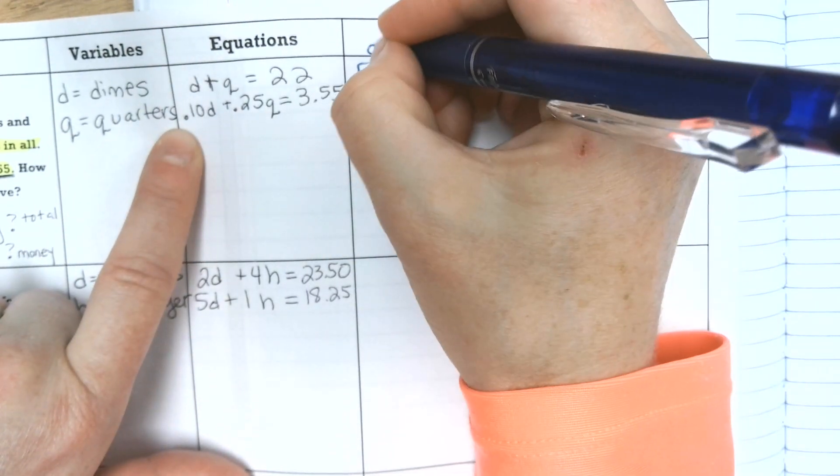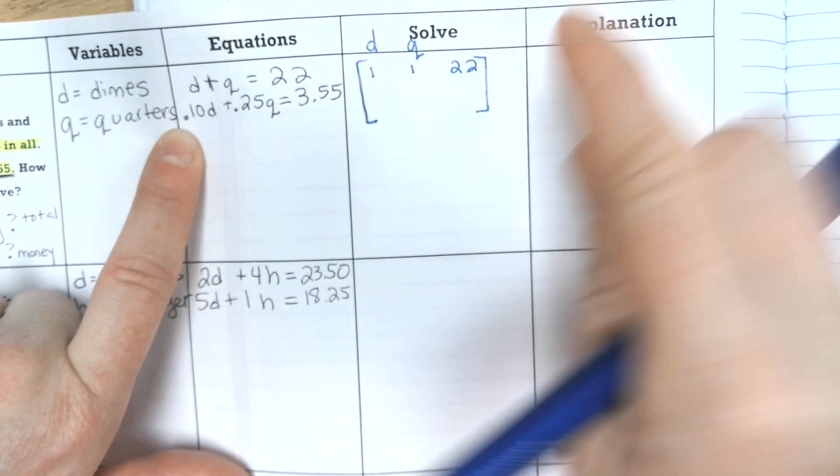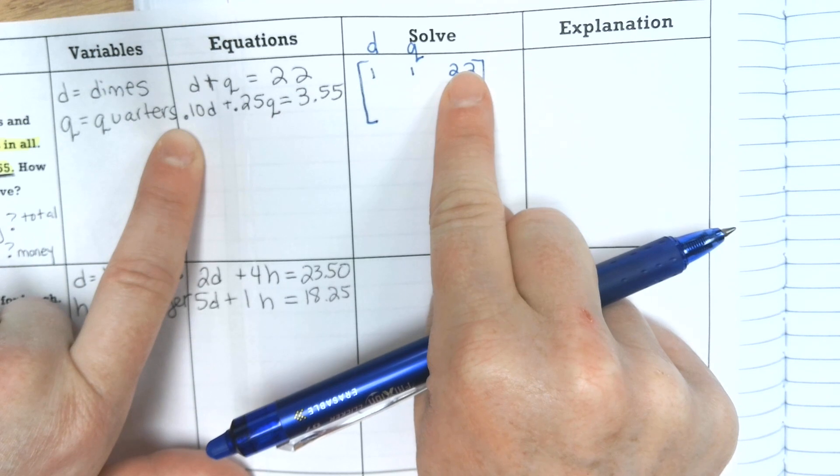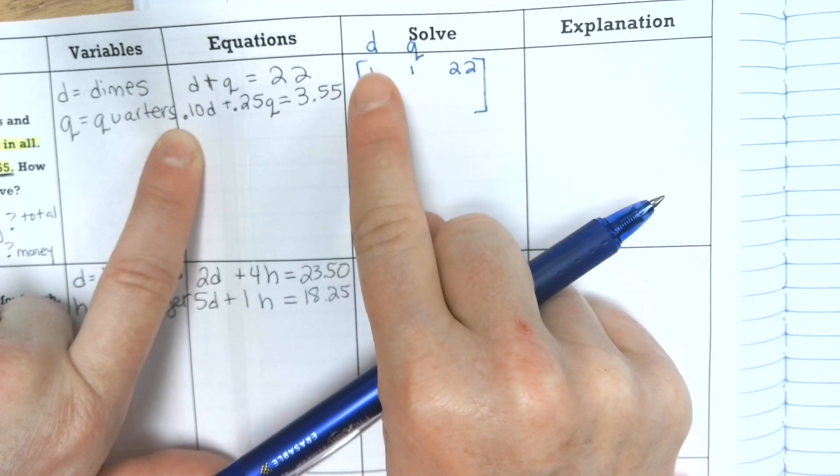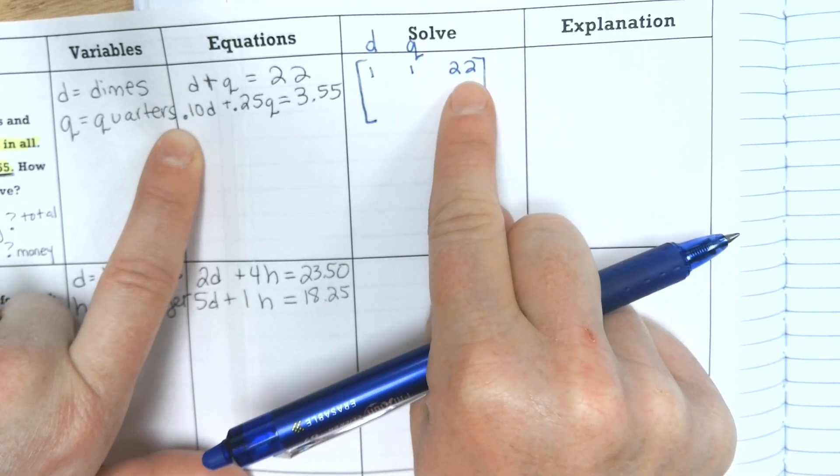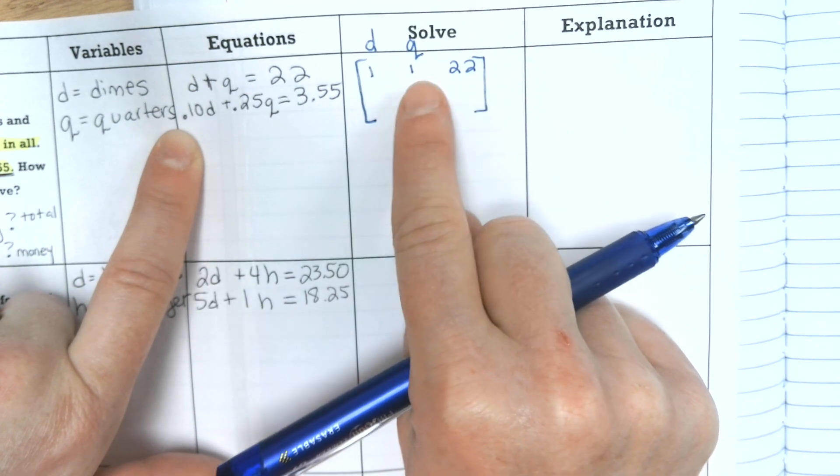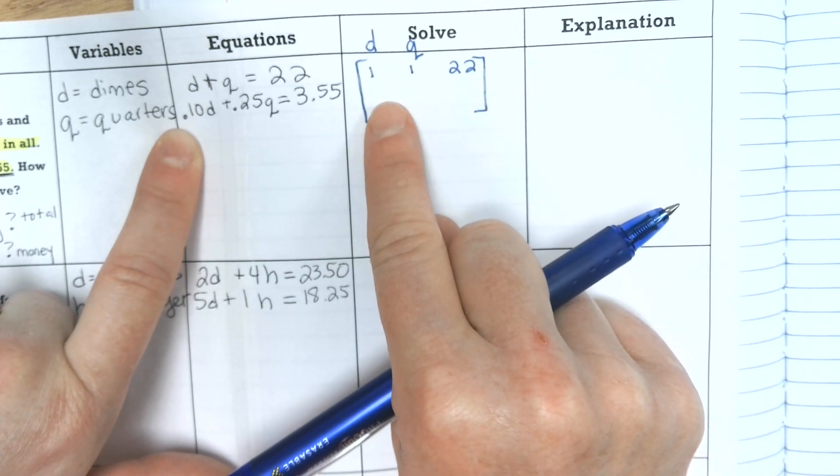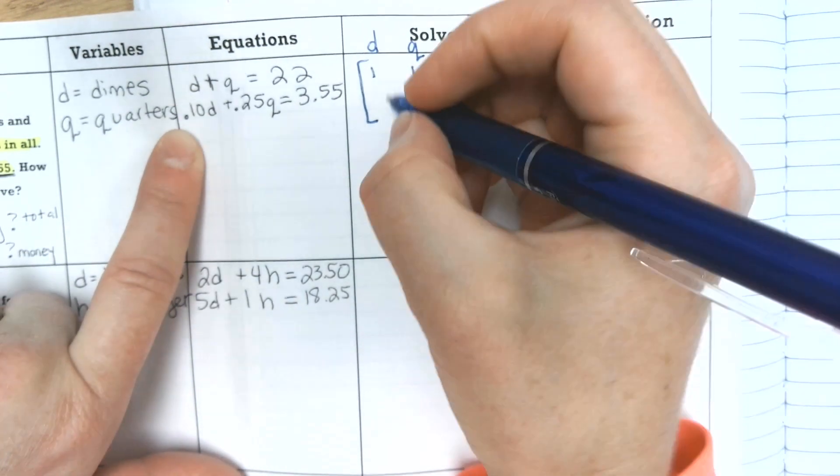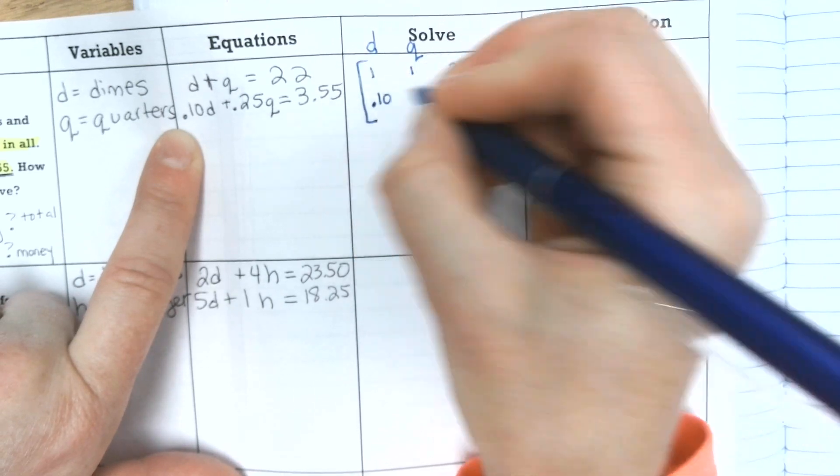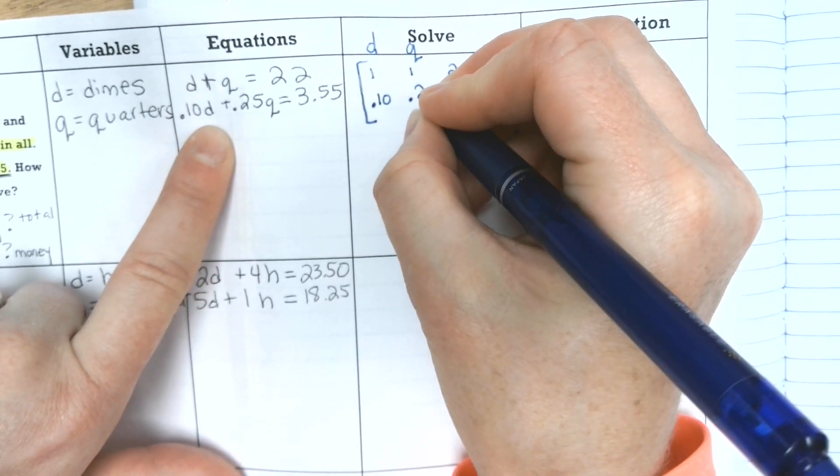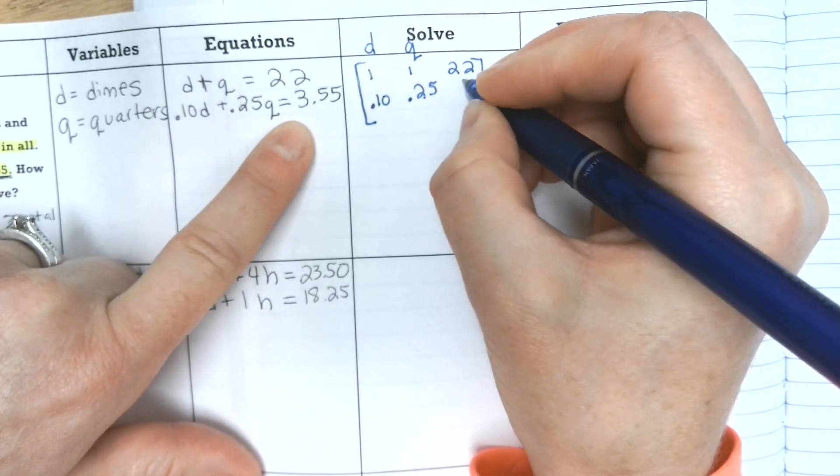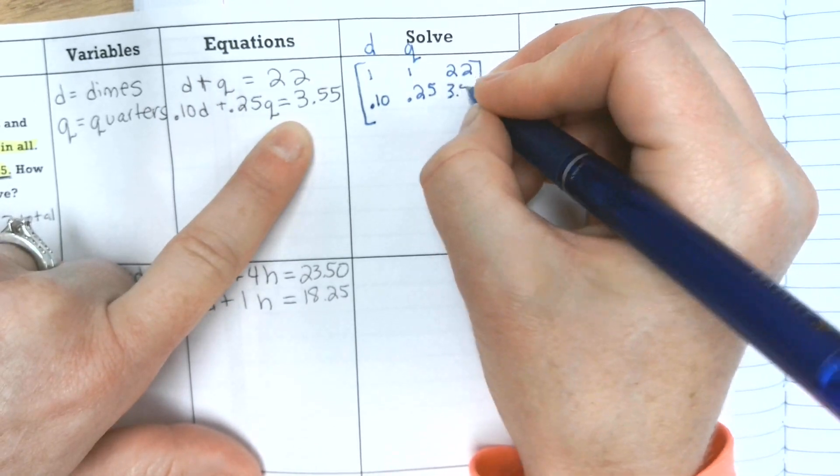And remember, it's d q and then equals a number. And so the next one needs to be d q equals a number. If they're mismatched, then you are not going to get the correct solution. So then the next one is .10 for 10 cents, 25 cents for quarters, and then 355.